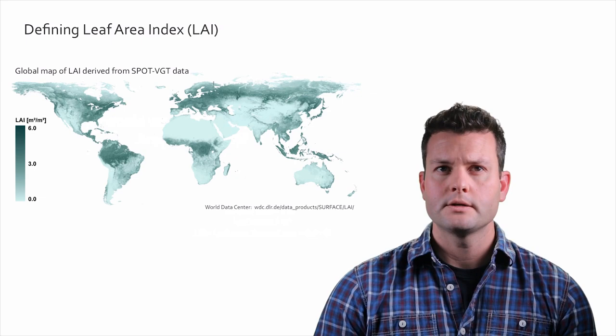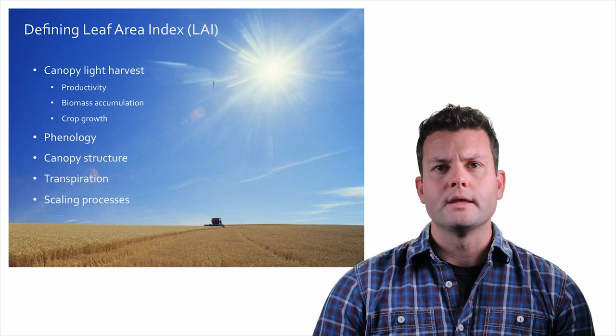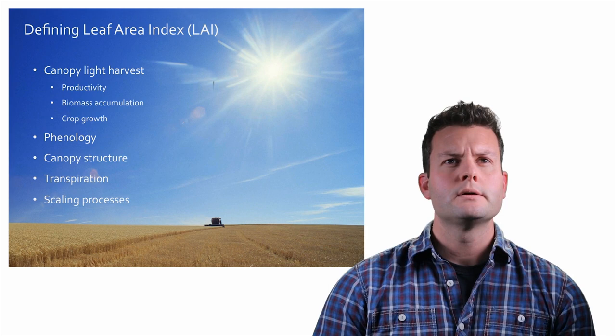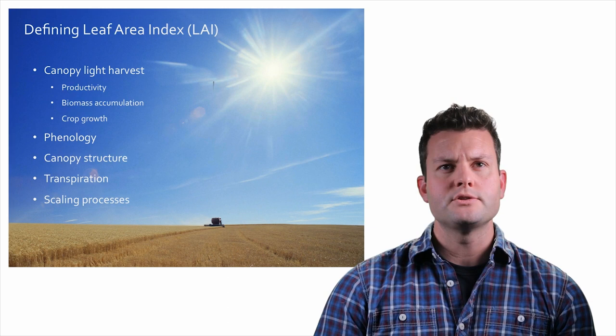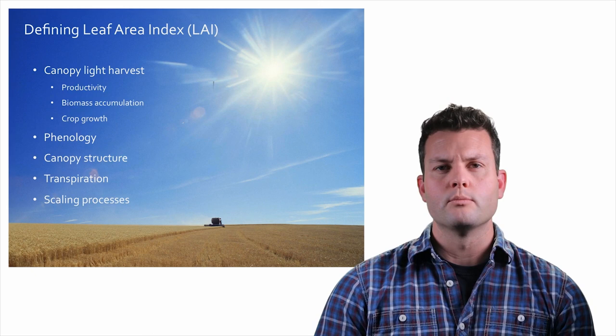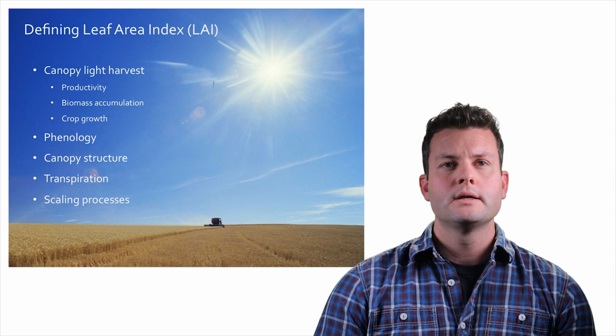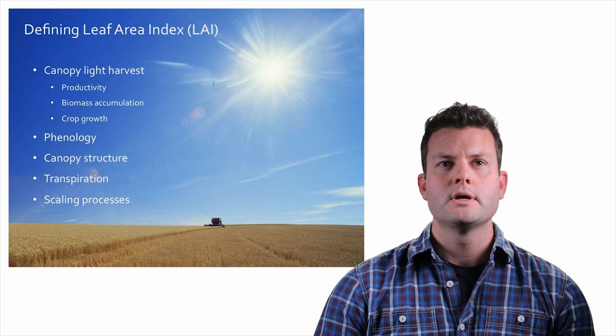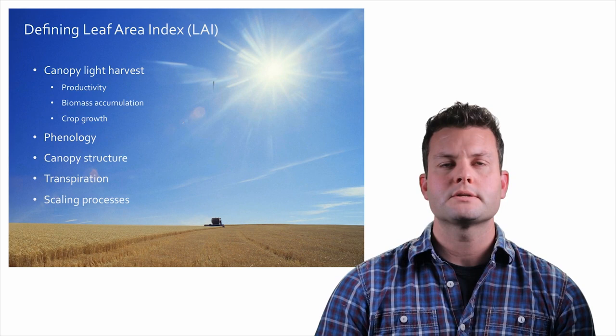A few reasons why LAI is so important. One of the really important things LAI is related to is light harvesting. The more leaf material in a canopy, the more capacity there is to absorb light energy from the sun. That light energy drives plant productivity — primary productivity — through the uptake of carbon dioxide from the atmosphere and fixing it into carbohydrates. This is related to biomass accumulation, crop and forest growth.